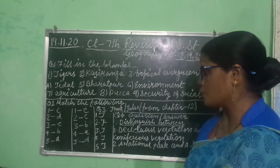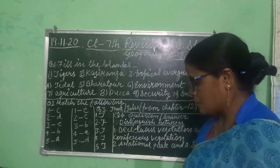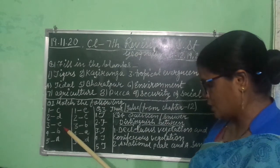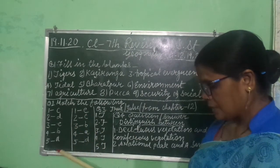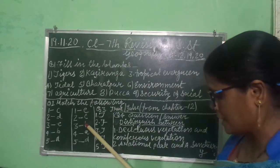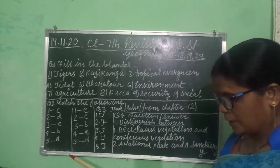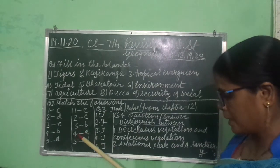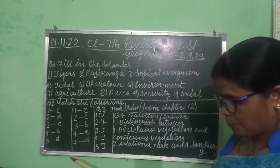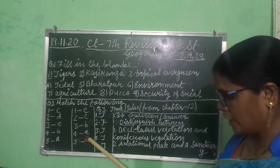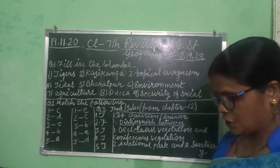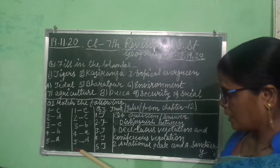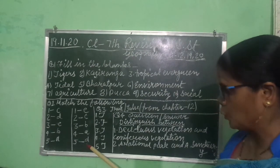Now match the following for chapter 20. Environment matches with E, that is surroundings. Second, early man matches with C, that is lives in caves. Third, kacha houses match with B, that is straw and mud. Fourth, pakka houses match with A, that is cement and bricks. Fifth, bungalow matches with D, that is has many rooms. Okay?